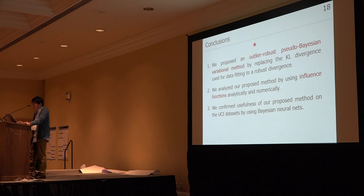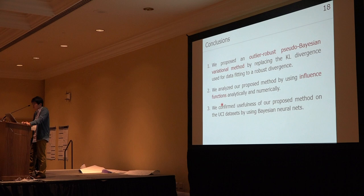This is the conclusion. We proposed an outlier-robust pseudo-posterior-based variational inference method by replacing the KL divergence used for the data-fitting term with robust divergence. We analyzed our proposed method using the influence function both analytically and empirically, and confirmed the usefulness of our proposed method on UCI datasets using Bayesian neural networks. Thank you for listening.